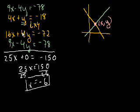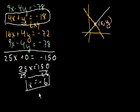Now to solve the y-coordinate, we can just use either one of these equations up at top. So let's use this one, because it seems a little bit marginally simpler. So we just substitute the x back in there. And we get 4 times minus 6 plus y is equal to minus 18.